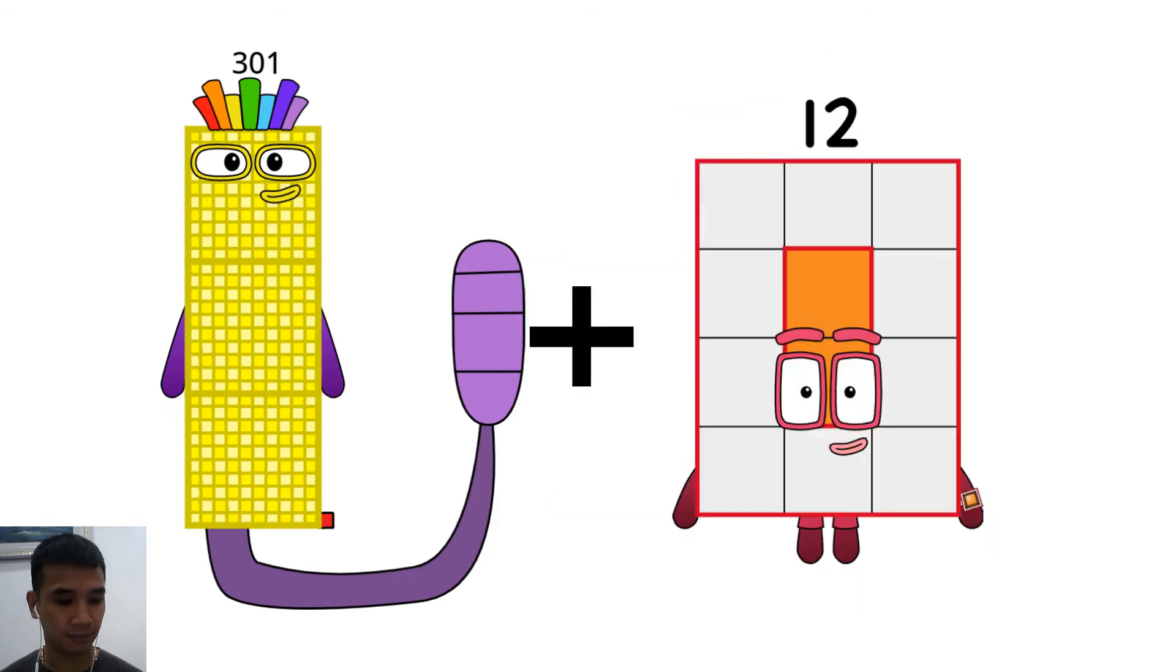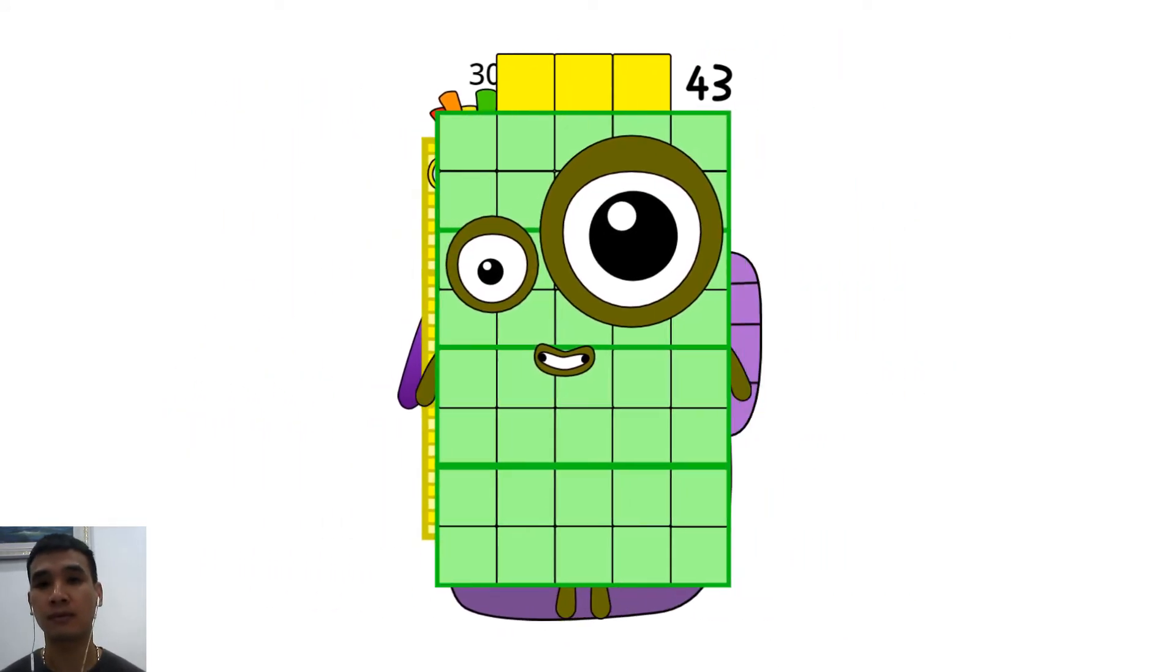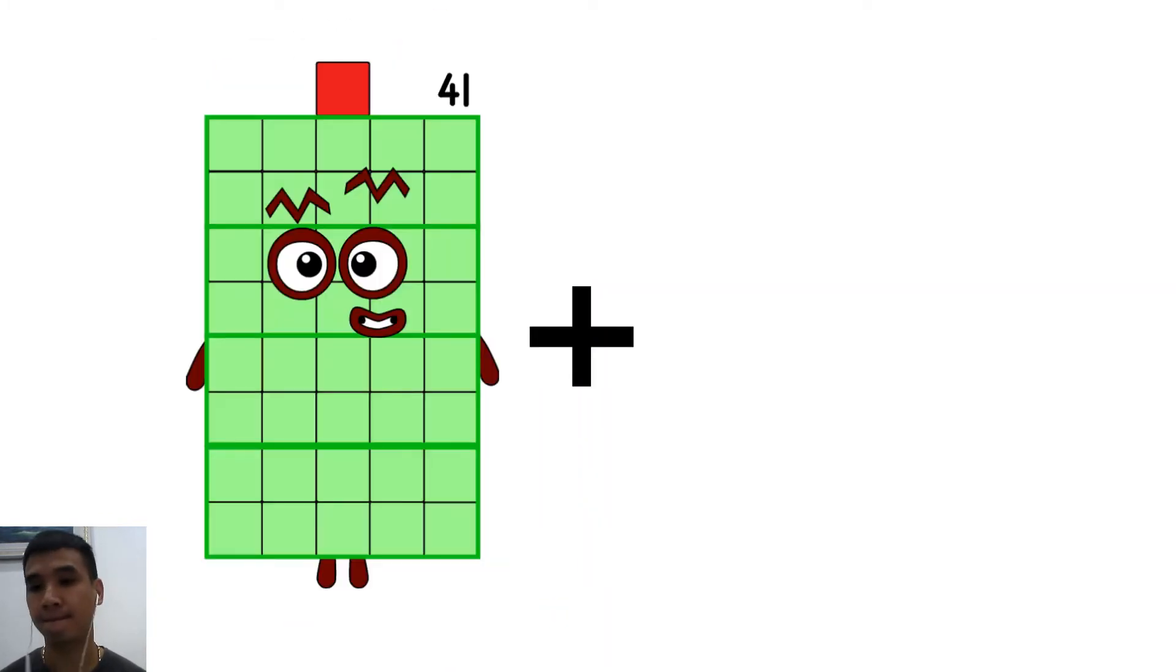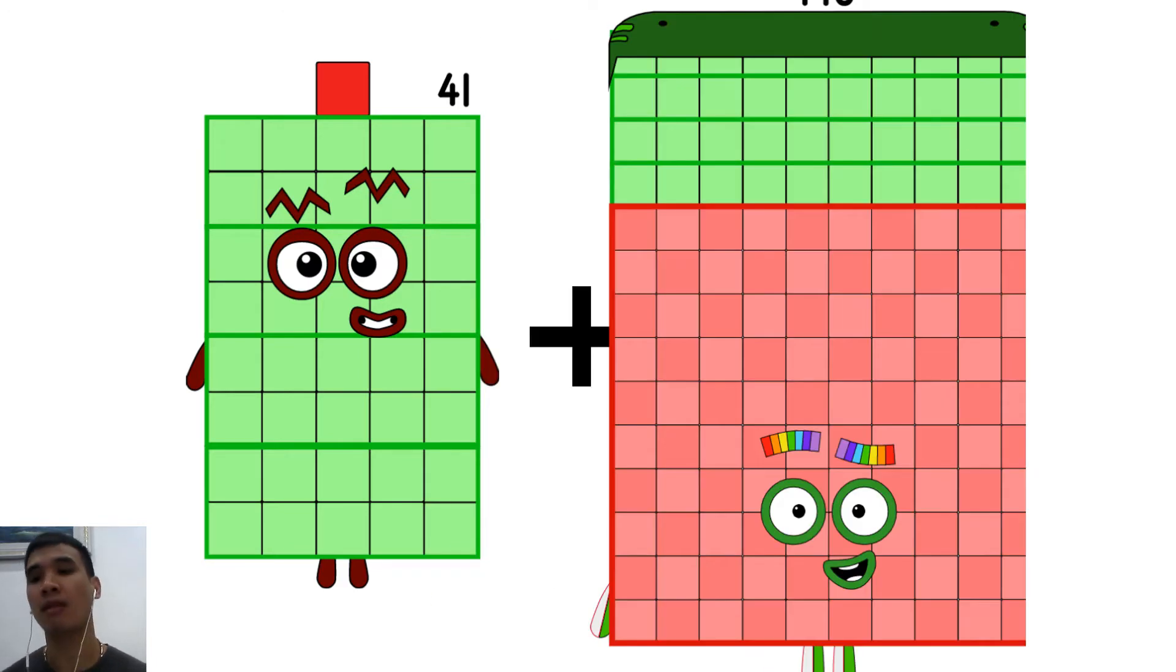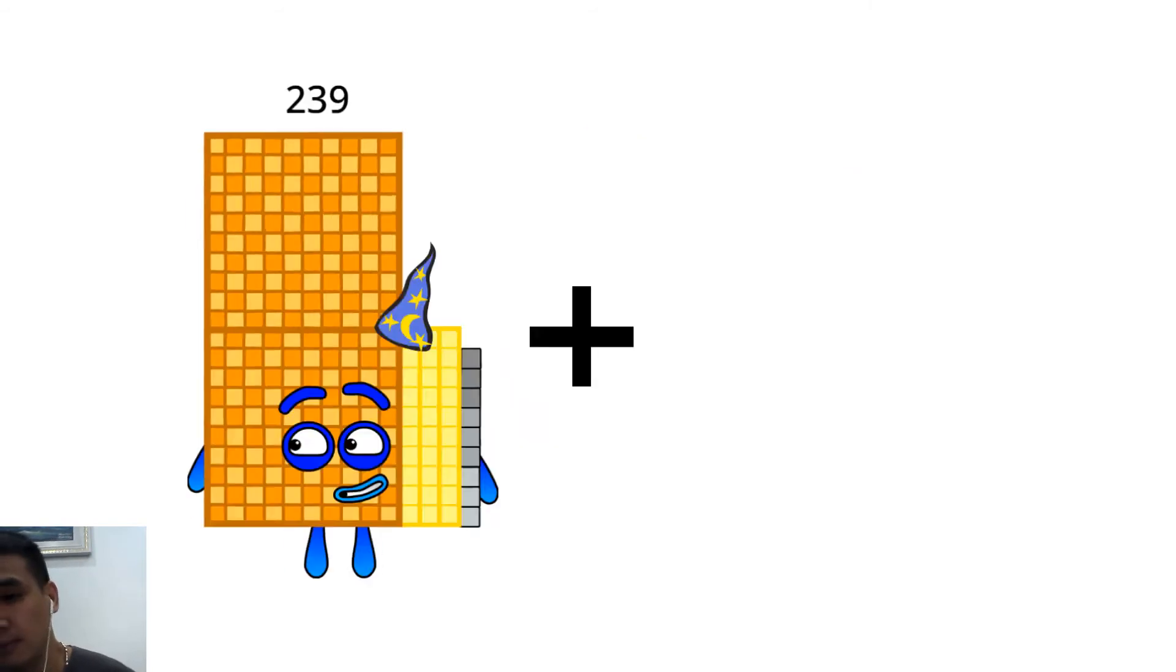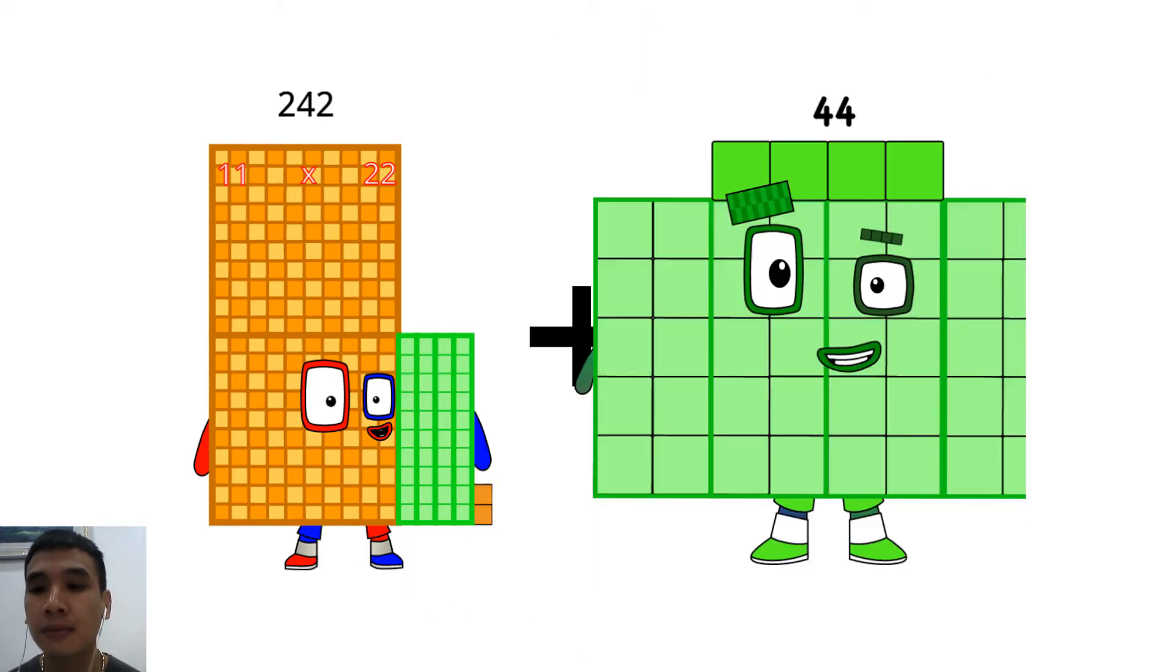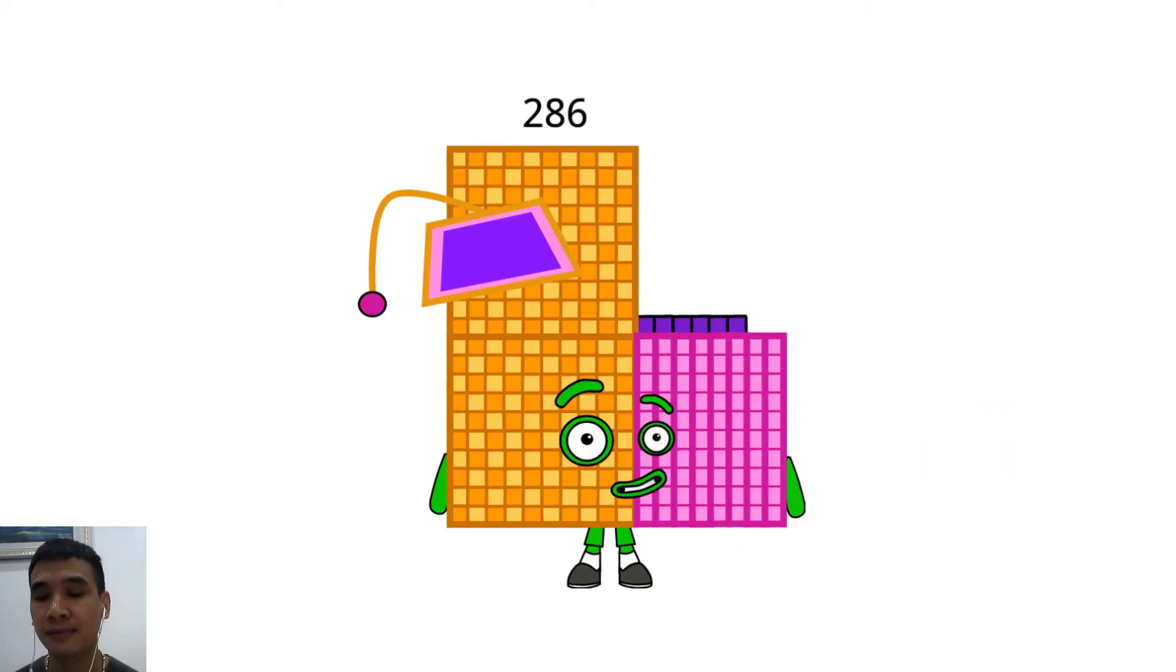Three hundred one plus forty-three equals twenty-nine. Forty-one plus one hundred forty, twenty equals one hundred eighty-one. Two hundred forty-two plus forty-four equals two hundred eighty-six.